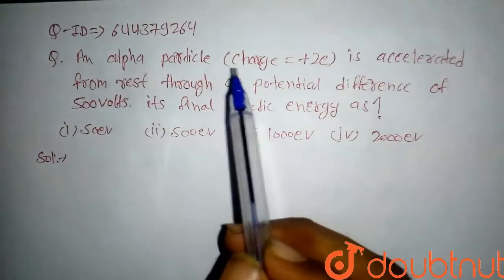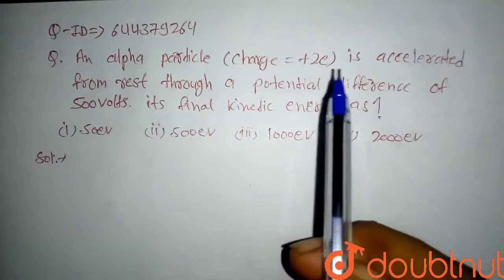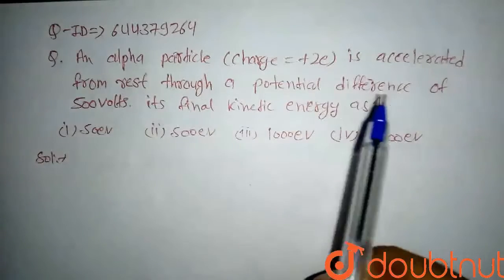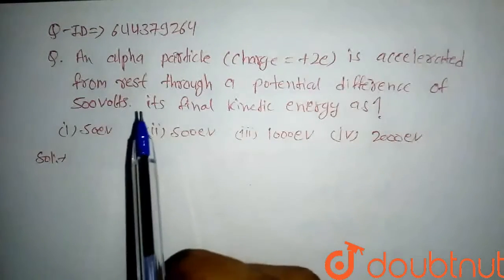An alpha particle (charge equal to +2e) is accelerated from rest through a potential difference of 500 volts. Its final kinetic energy is?